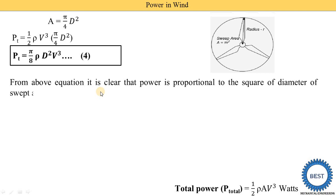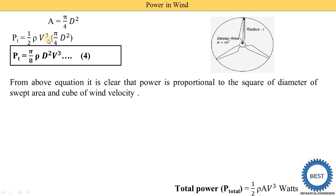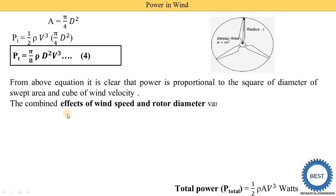From equation 4, it is clear that power is proportional to the square of the diameter of the swept area and to the cube of wind velocity. If the diameter increases, total power increases; if the diameter decreases, total power decreases. The combined effect of wind speed and rotor diameter variation is shown in a figure.